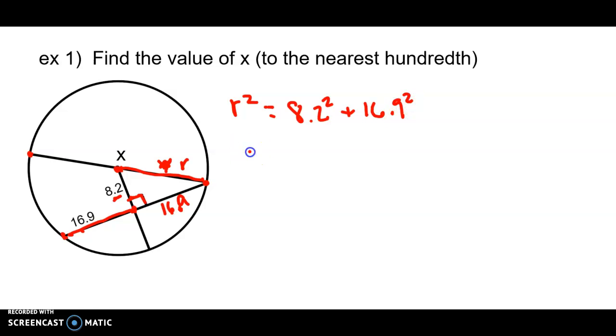So R is the square root of 8.2 squared plus 16.9 squared. And X will be two radii, two times the radius. So if we do two times the radius, we'll have our answer.